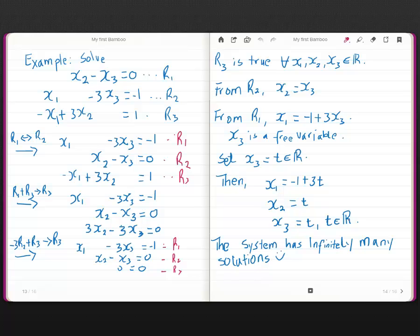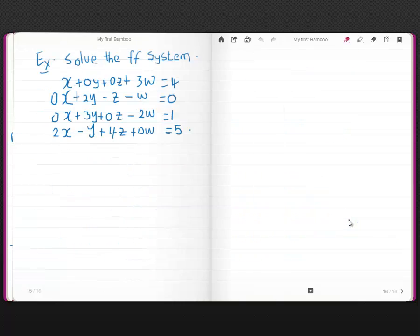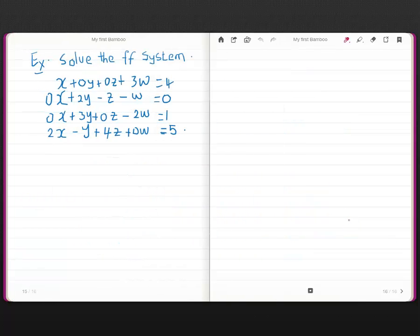You see here that the big thing for this lecture has been to convert a system to row echelon form. You feel like trying a system on your own? Now look at the following example. The first equation is x plus 3ω equals 4, 2y minus z minus ω equals 0, 3y minus 2ω equals 1, 2x minus y plus 4z equals 5. Now I want you to solve this system. First of all, by reducing it to a row echelon form and then use back substitution. Enjoy.